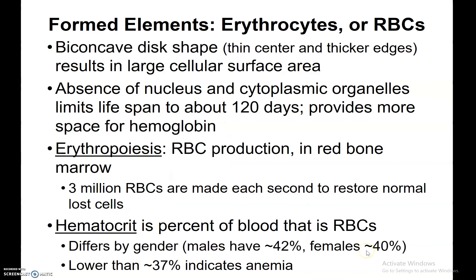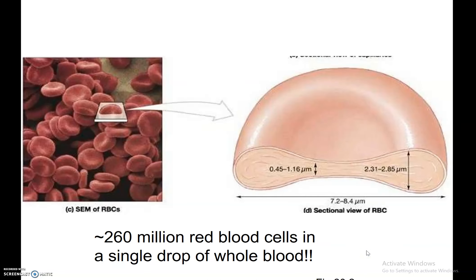We ended on our last slide with the formed elements of blood. The erythrocytes lose their nucleus later on during their development, but before entering circulation. If you take an erythrocyte and cut it in half, you'll see that the edges are thicker than the center. This allows a better distribution of hemoglobin through the cell for the distribution of oxygen. We have about 260 million red blood cells at any given time in a single drop of blood, if you are not anemic.